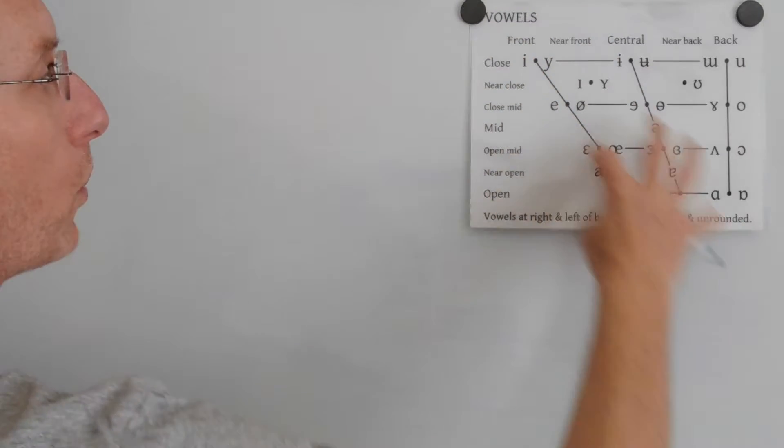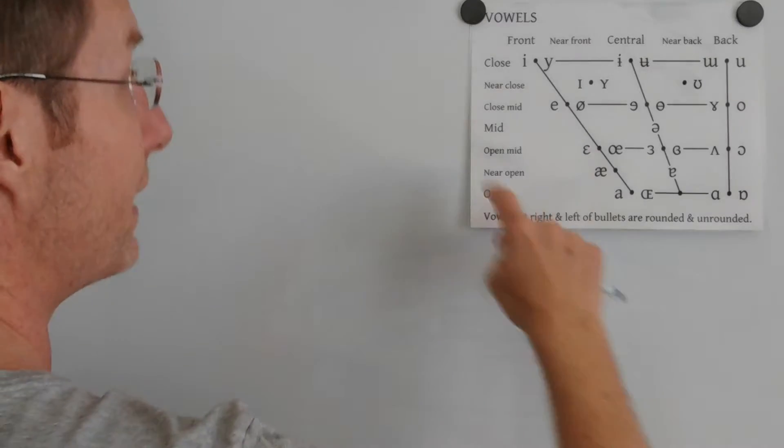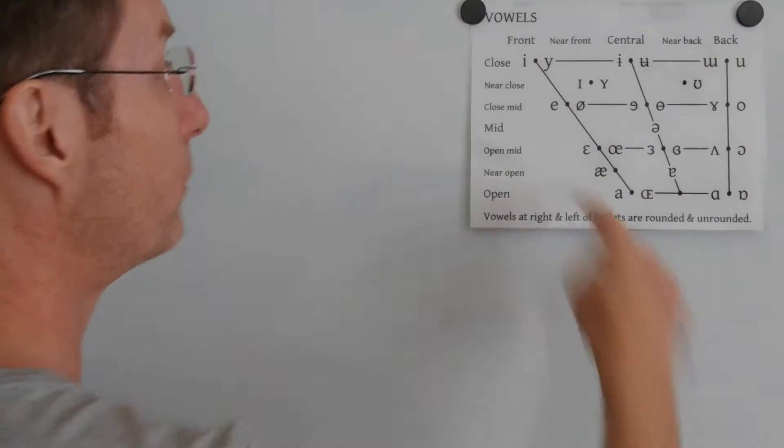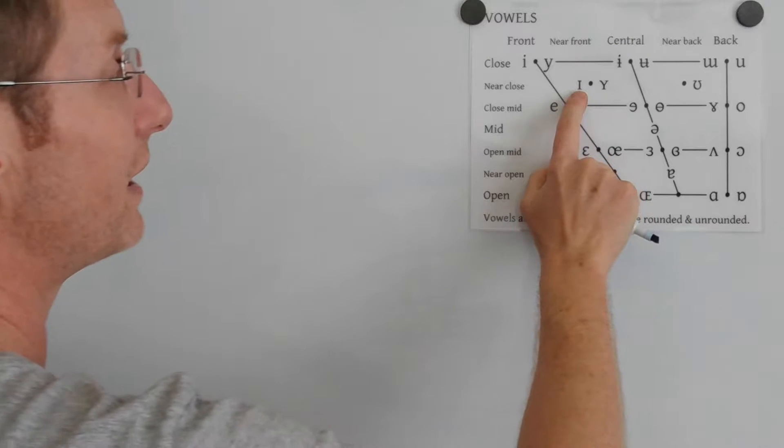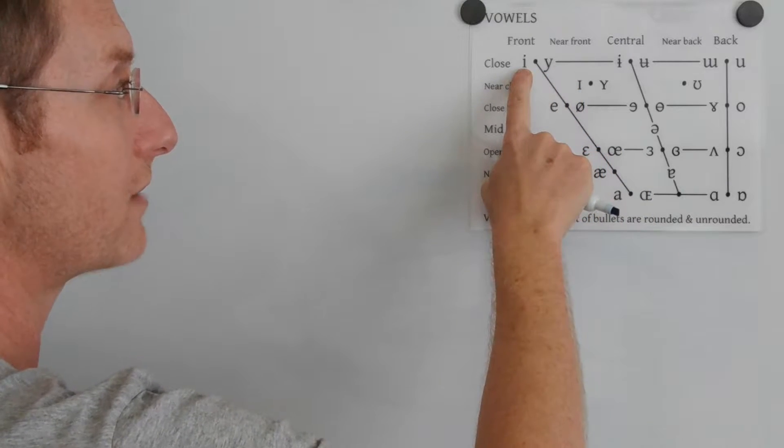If you look at the vowel quadrilateral, this is from the International Phonetic Association and how they represent the vowel sounds. Here is the IH as in kit, and here is the E as in fleece.